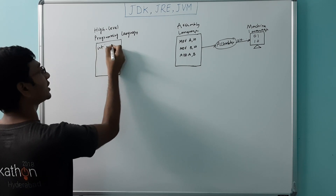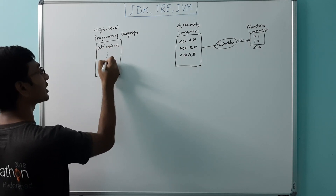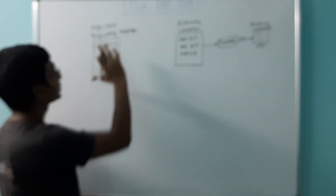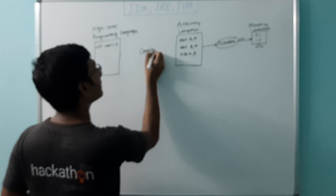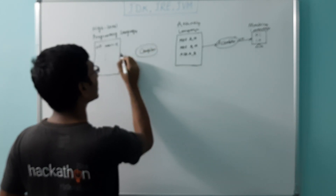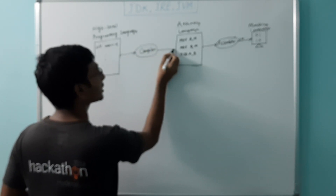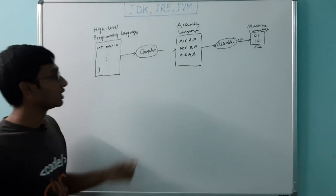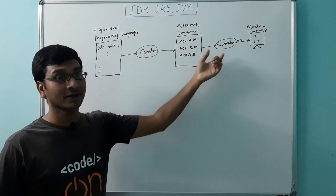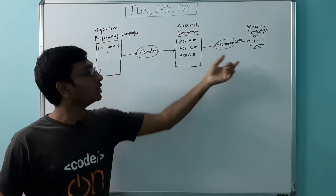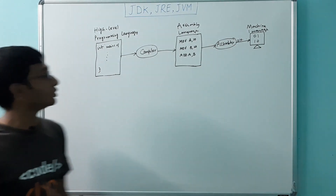These high-level programming languages allow us to write complex logic and even build huge projects. Code written in a high-level programming language is converted to assembly language by language-specific compilers. Each language has its own compiler, and this compiler converts the code into assembly language. From assembly language, the assembler converts the code into machine language. This is the usual flow.